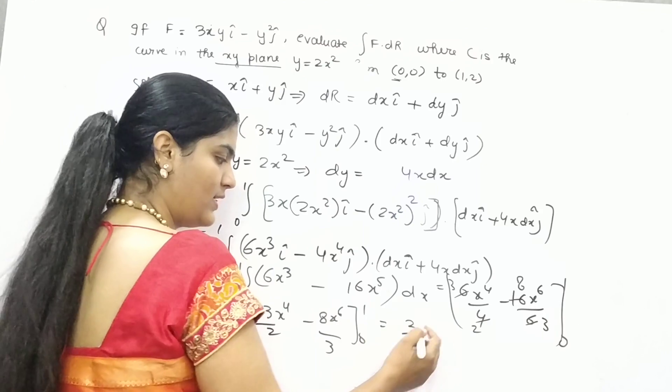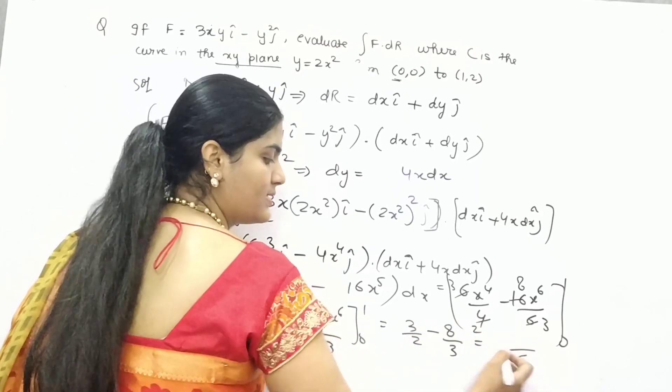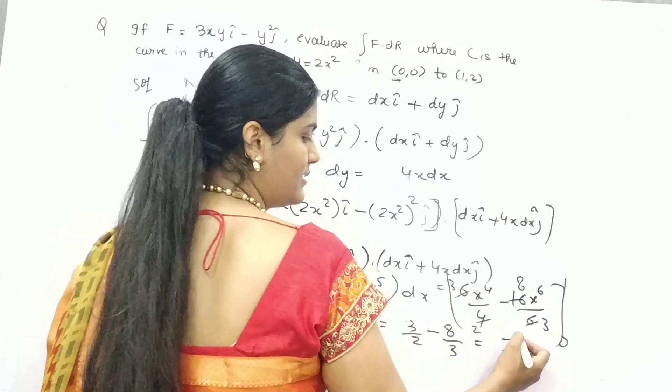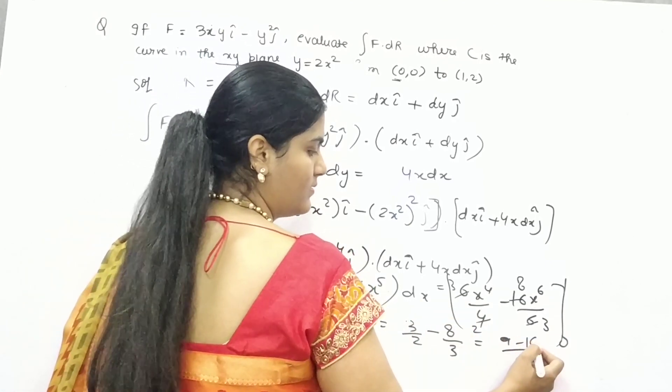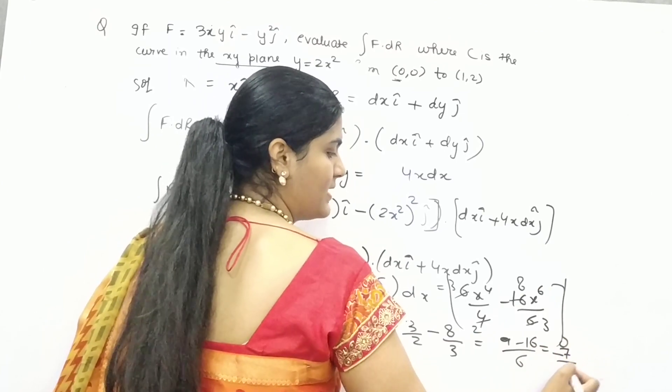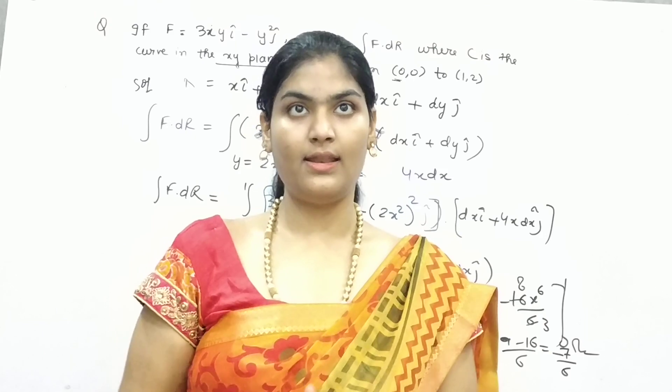3 by 2, x to power 4 is 1. 8 by 3. 9 minus 16 is, this is 9. 3 times 3, 16. Minus 7 by 6. So this is how you can calculate line integrals.